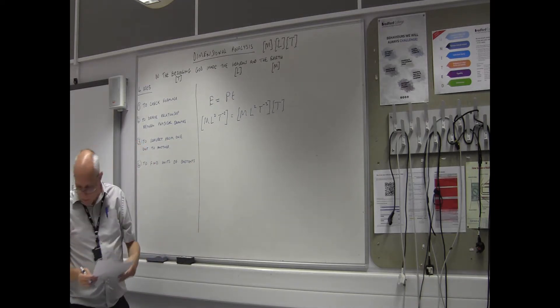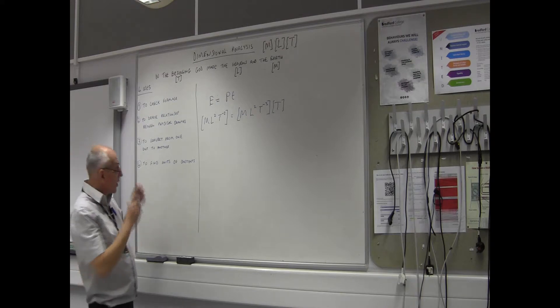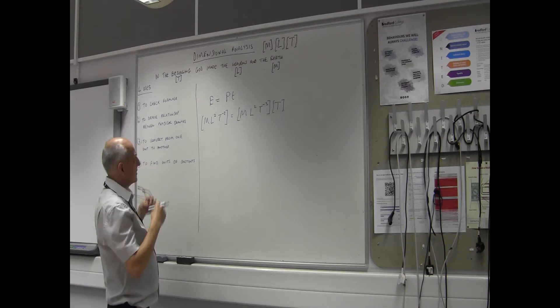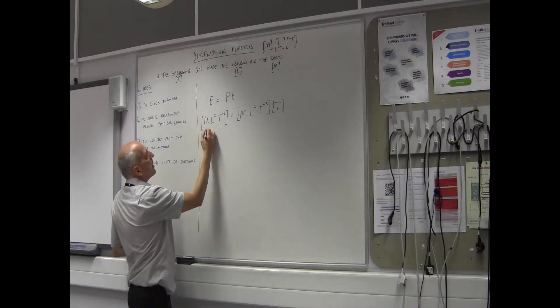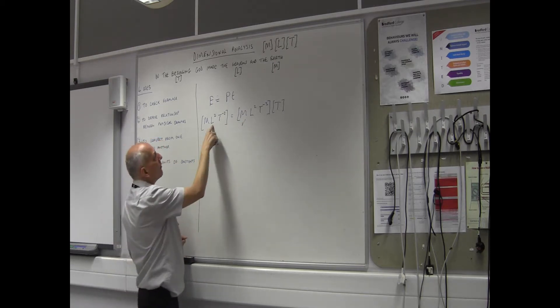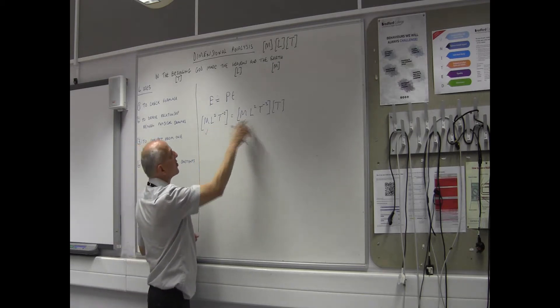Let's check I've got everything there. Right, let's see what we can do with that. So let's have a look. We've got 1 M on both sides. That's good. Left hand side, we've got L squared on both sides. So that's good.